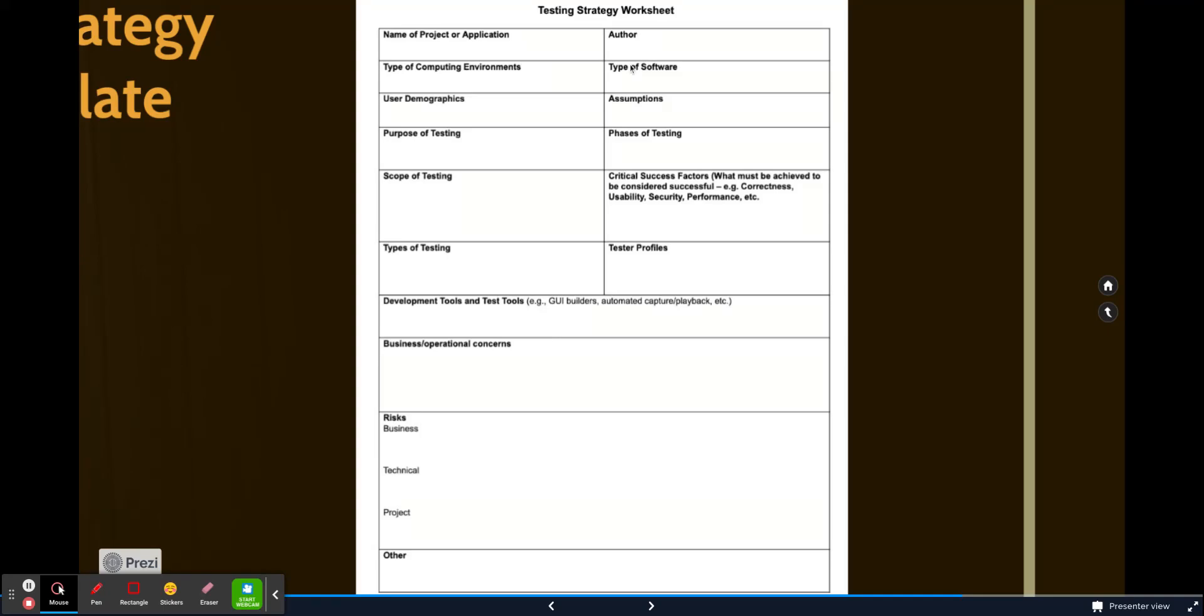So if you see the pointers here, it says name of the project. Therein we did not have name because it is already at the project level. But herein, we are discussing it at the organization level. So you're working in an organization, and every organization will have a couple of practices set for QA. So all these practices will be mentioned in this particular document and will be shared with the clients. It says type of computing environments, type of softwares, user demographics, that is where in the system will be used, what is the purpose of testing, what is the scope of testing, who are the testers or the QA professionals that will be testing, type of testing that will be done, risks and all these other parameters.